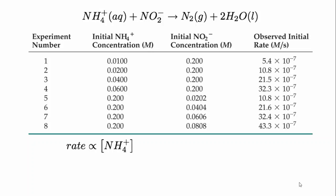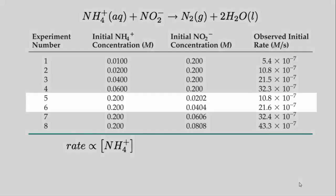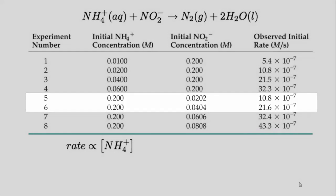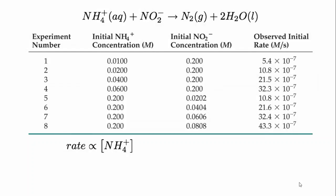Next, let's have a look at the nitrite ion. In experiments 5 and 6, the ammonium is held constant and the nitrite is doubled. And again, the rate doubles. Looking at the rest of the data, you can find that the rate also is directly proportional to the nitrite concentration. Now, knowing these two things, we can say that the rate must be proportional to the product of these two concentrations.